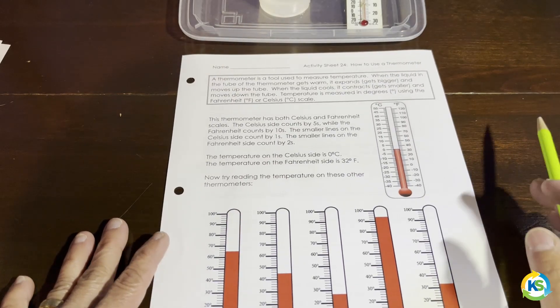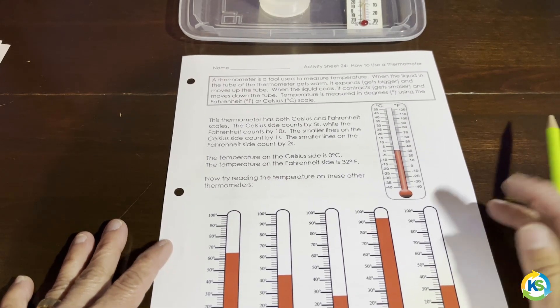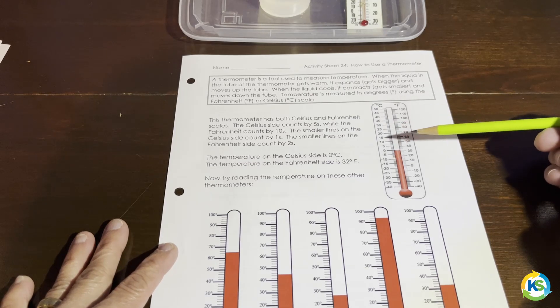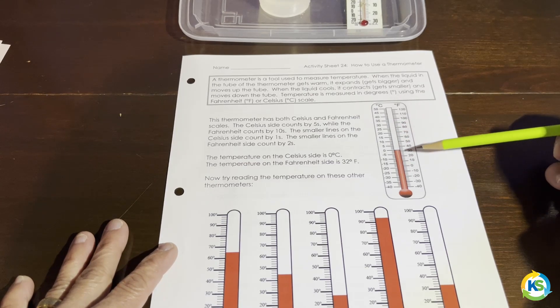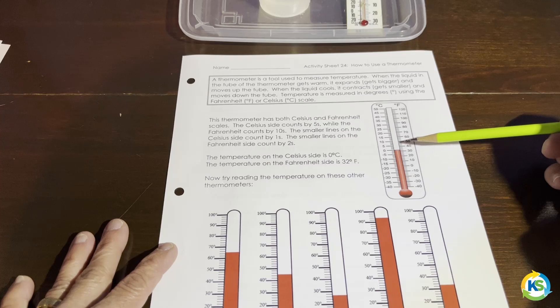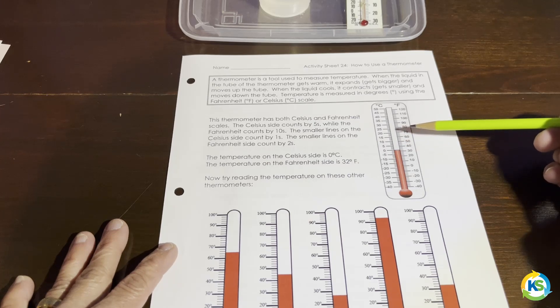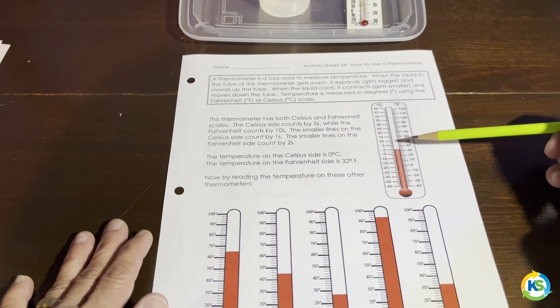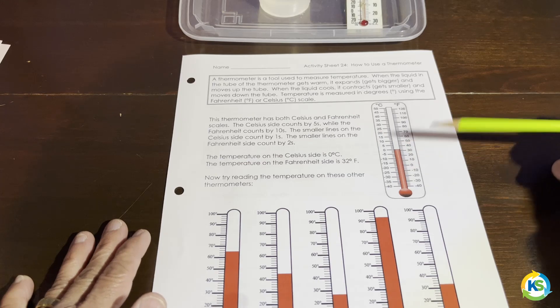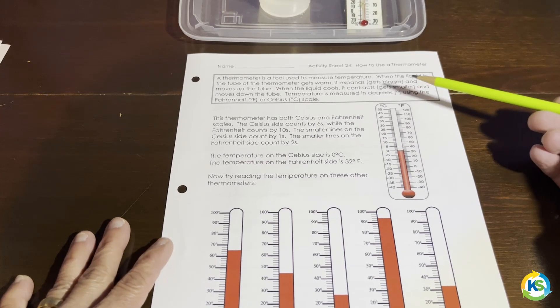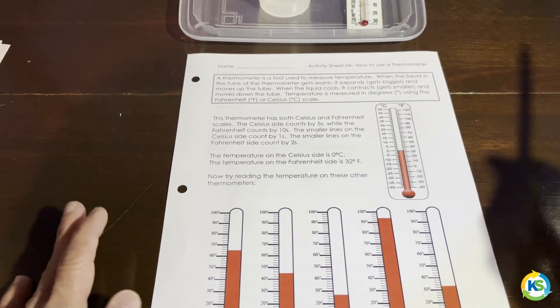It says a thermometer is a tool used to measure temperature. When the liquid in the tube of a thermometer gets warm, it expands and moves up the tube. When it cools, it contracts and moves down the tube. Temperature is measured in degrees using the Fahrenheit or Celsius scale.